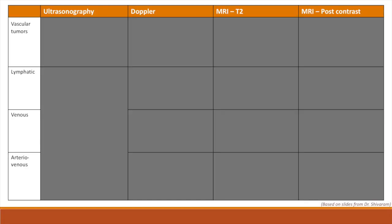Now that we've covered each type of vascular anomaly, I want to review the imaging characteristics for each type and how to differentiate between all the different vascular anomalies based on imaging findings. After this, we will go through examples for each type. There are really four key types of images we need to look at. First line imaging will be ultrasound and color Doppler. And to confirm our diagnoses, we will then look at T2-weighted MRI and post-contrast MRI images.